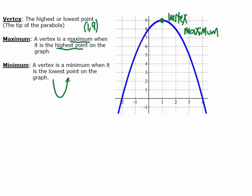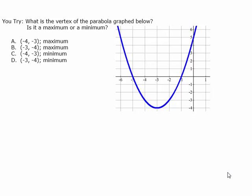If our parabola opened up instead of opening down, then the vertex would be a minimum because it would be the lowest point. For this practice problem, you'll notice that the parabola opens up, so the lowest point on the graph will be the vertex. In this case the vertex is a minimum and happens right here at negative three comma negative four. Notice you always list the X and then the Y: negative three, negative four — and it is a minimum. So D is the correct answer choice.